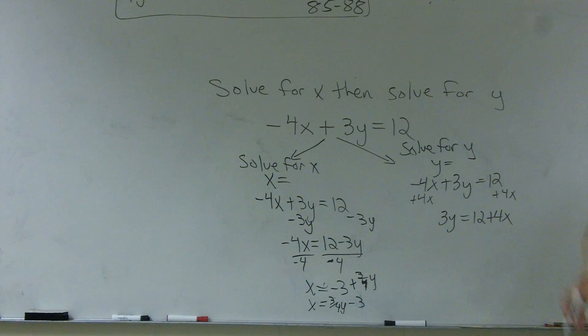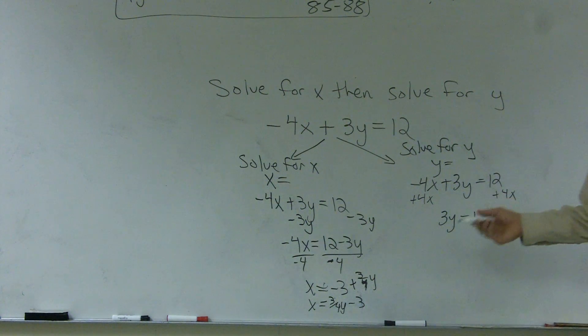All right? It does not equal 16x, nor does it equal 16. 12 plus 4x equals 12 plus 4x. Now I need to undo multiplication of 3 by dividing.